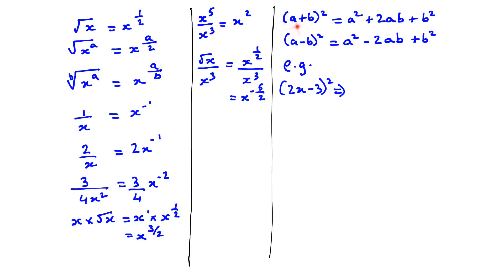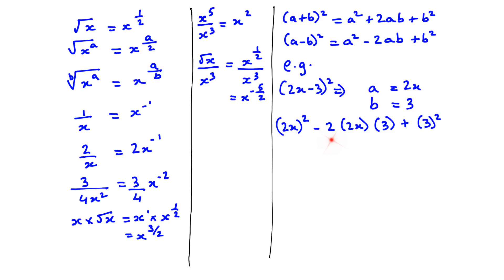If you have a bracket with a power, you have to expand it. It's a good idea to learn these two identities: (a + b)² = a² + 2ab + b², and (a − b)² is the same except we change the sign. For example, (2x − 3)²: here a is 2x and b is 3. Using the identity we get (2x)² − 2(2x)(3) + 3², which gives us 4x² − 12x + 9.